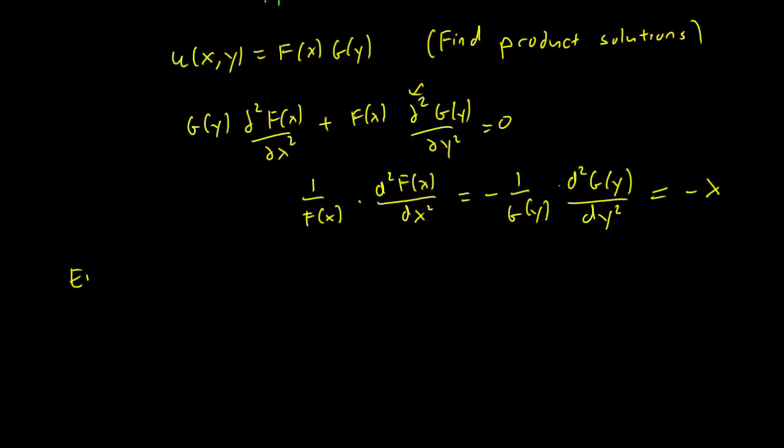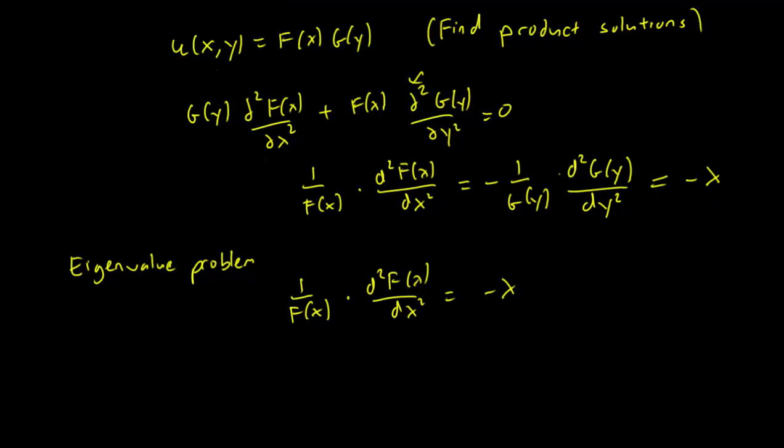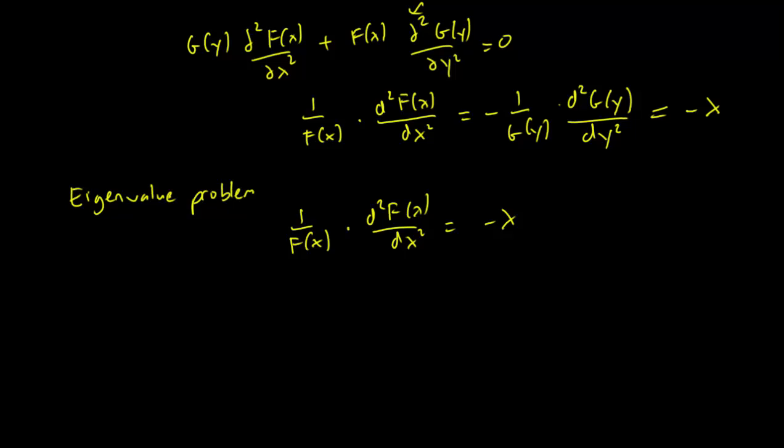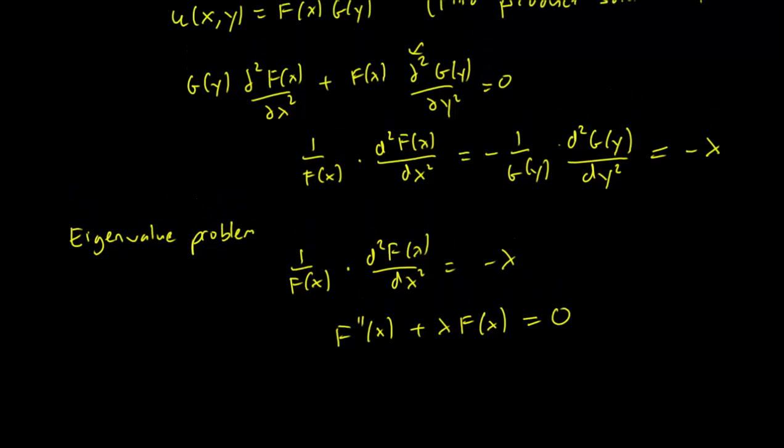So let's look at the eigenvalue problem, and this one is going to be 1 over f times second derivative equals minus lambda, or we can rewrite it as the very familiar f double prime plus lambda f equals 0. Let's figure out what our boundary conditions are.